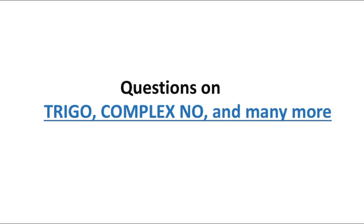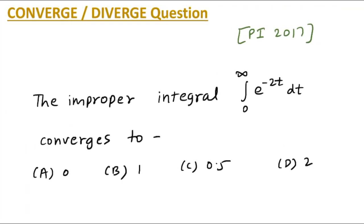Hi everyone, welcome to Study Simplified. In this video we are going to see the gate questions based on trigonometry, complex numbers, and many more concepts. Starting with the first gate question, this was asked in the Production Engineering 2017 gate paper: the improper integral from zero to infinity of e raised to minus 2t dt converges to what? Option a: 0, option b: 1, option c: 0.5, or option d: 2.